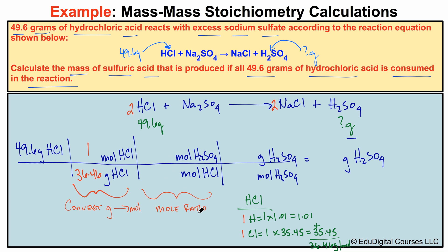For the mole ratio step, we look at our balanced chemical equation. We can see that for every one mole of H₂SO₄ there are two moles of HCl. The mole ratio allows you to compare an unknown quantity — in this case sulfuric acid — to a known quantity — hydrochloric acid. We get these values from the coefficients in our balanced chemical equation.